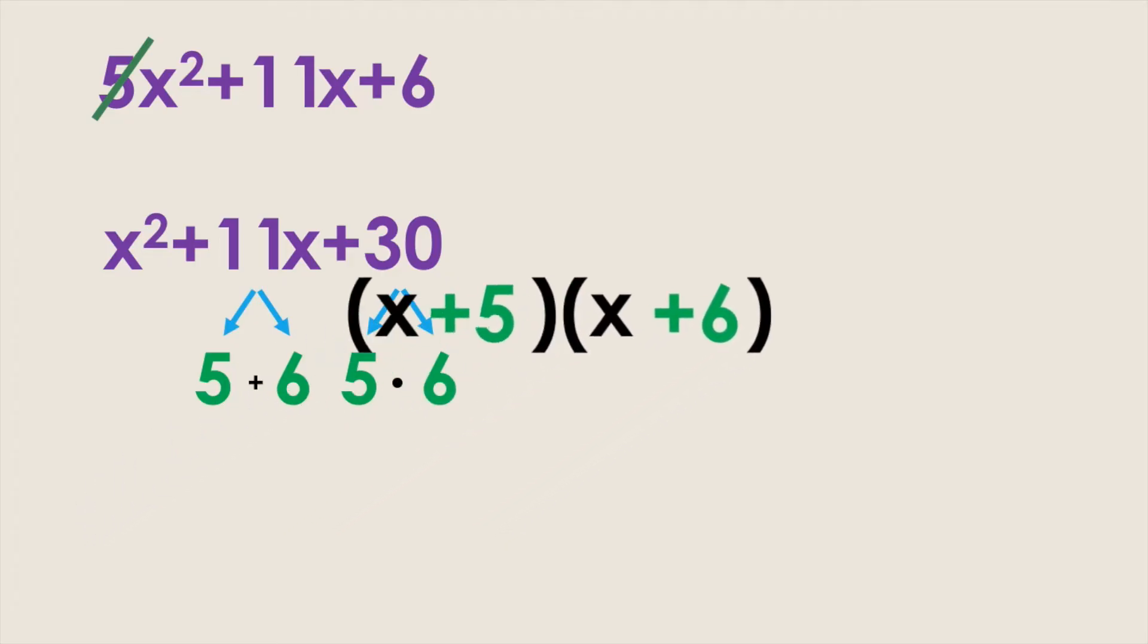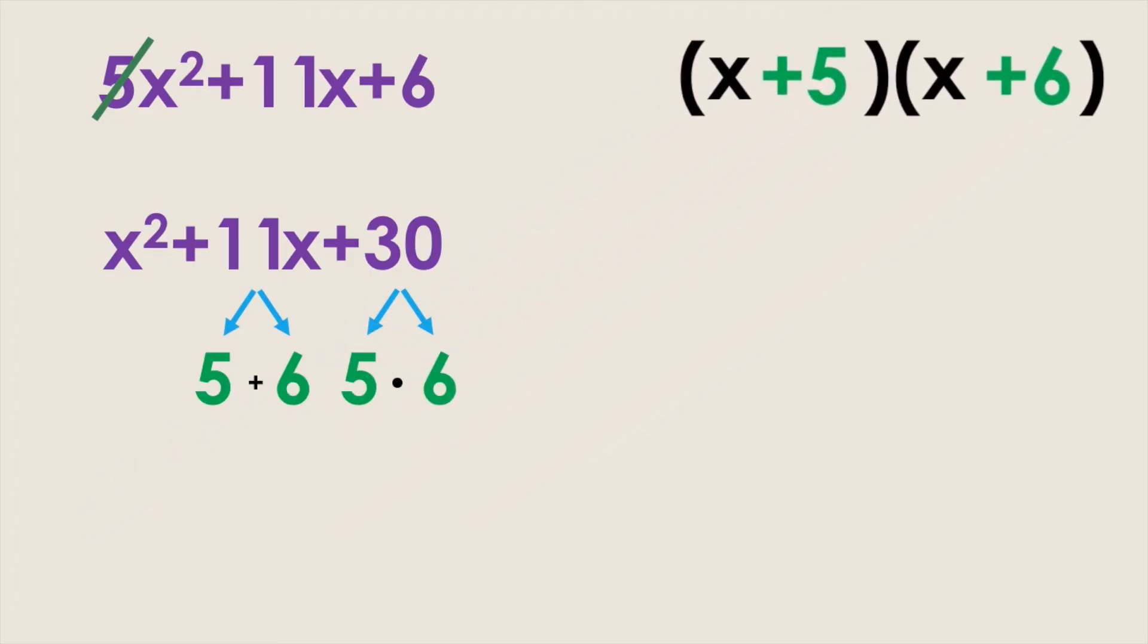Now taking this product of binomials, we then have to go back and divide by our original leading coefficient of 5 underneath each number. So we're going to divide the 5 underneath the 5 and the 6. Now you want to go ahead and simplify any fractions. 5 over 5 becomes 1 and 6 over 5 can't be simplified so we're going to leave it as 6 over 5.